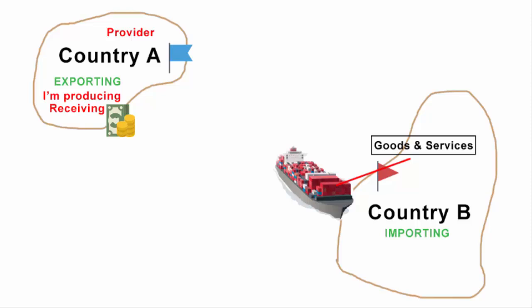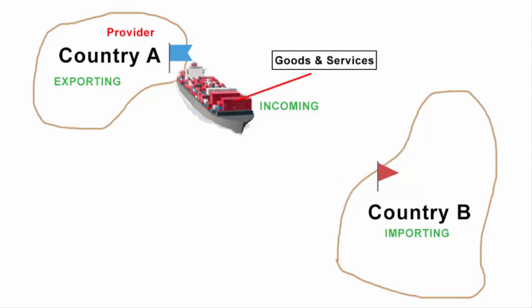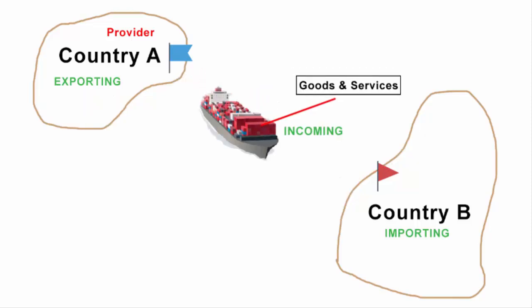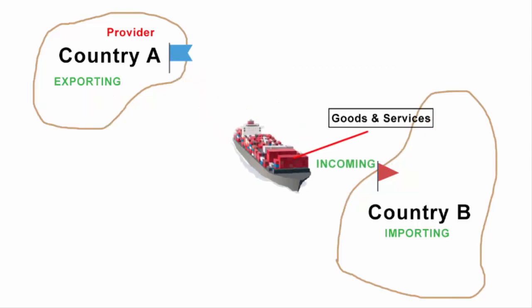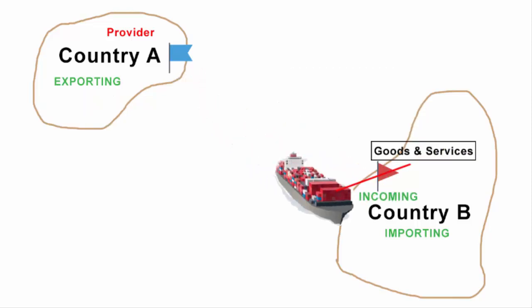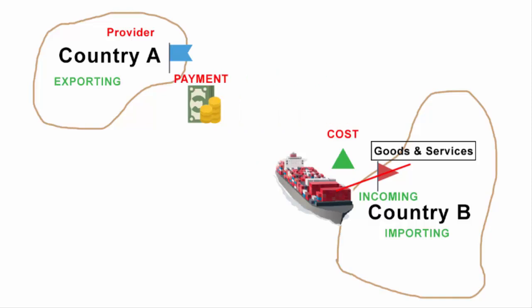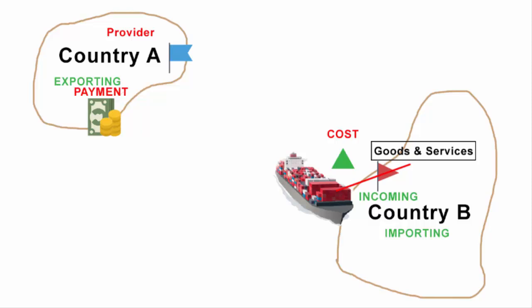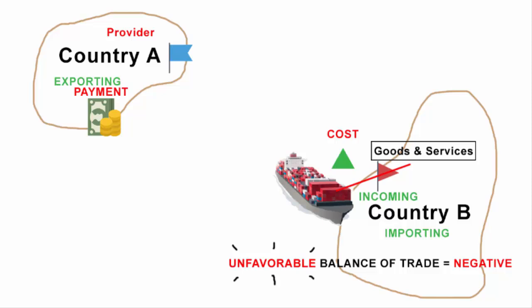Now if you are receiving more than providing — which means importing more than exporting — then your cost is going to be more than your revenue, meaning you will have to pay more in importing than you earn through exporting. In this scenario your balance of trade is negative, or we call it an unfavorable balance of trade.